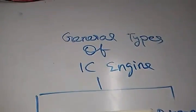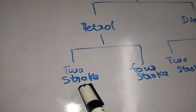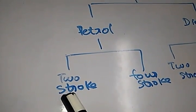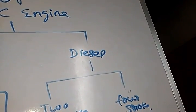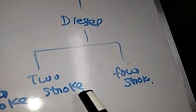Today we are going to look at the general types of IC engines. There are two types: the petrol engine and the diesel engine. The petrol engine is further classified based on strokes into two-stroke and four-stroke petrol engines. Similarly, diesel engines are also classified into two-stroke and four-stroke diesel engines.